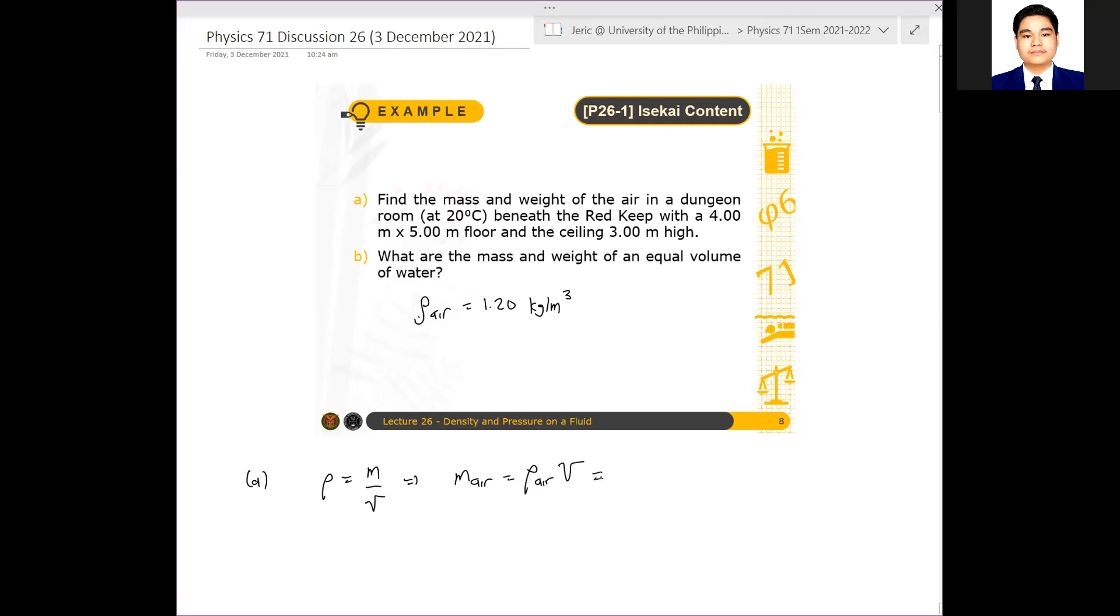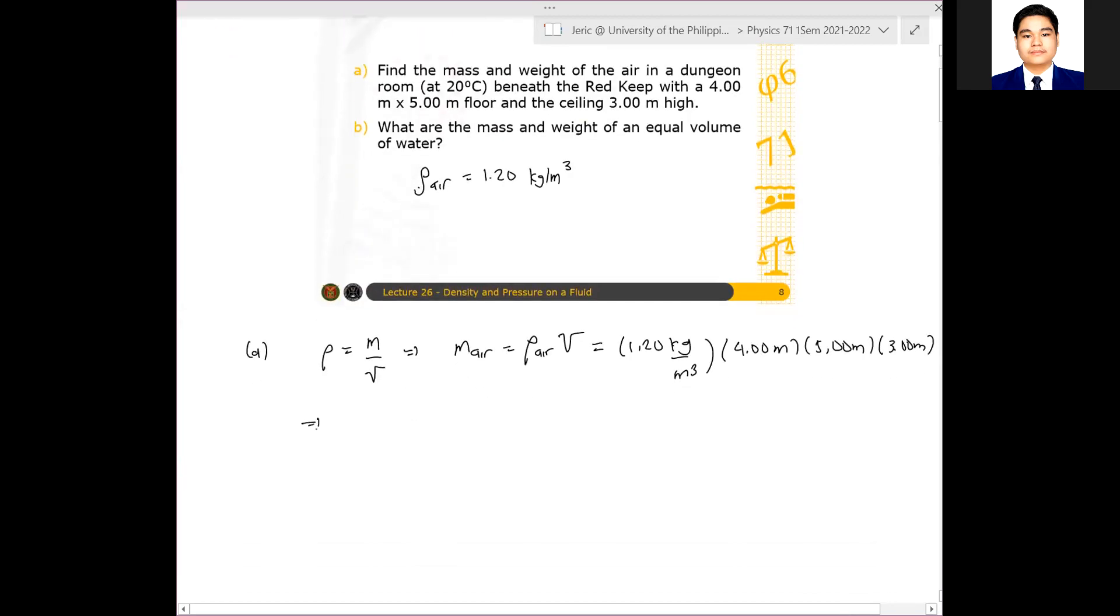Tama? So in that case, I'll just substitute. So the volume is just the total length times the total width times the total height of the dungeon. So in that case, I have 1.20 kilograms per cubic meter multiplied by 4.00 meters times 5.00 meters times 3.00 meters. And from there, I can get, pakicalculate na lang, madali lang naman to, the mass of air is just 72.0 kilograms, yun yung total mass ng air sa loob ng dungeon na yun.